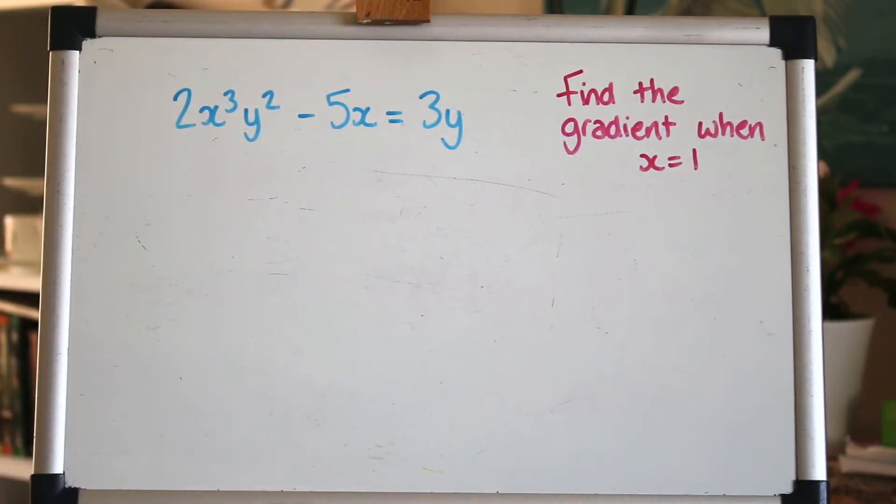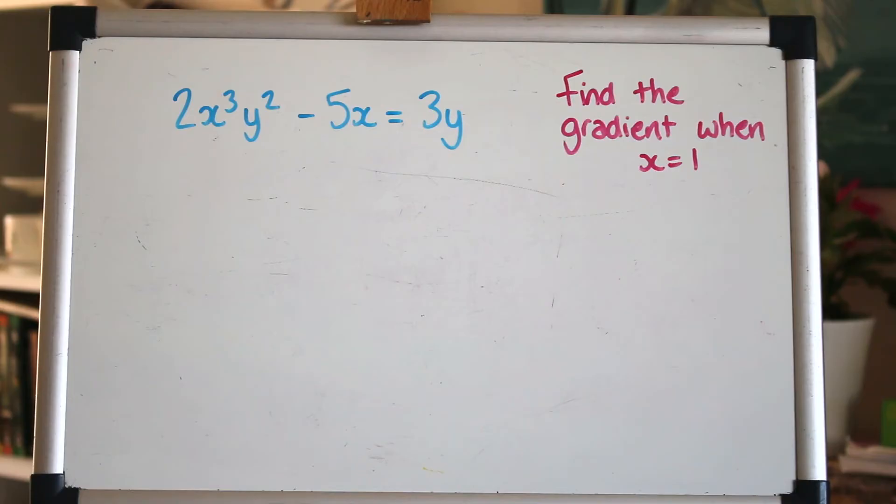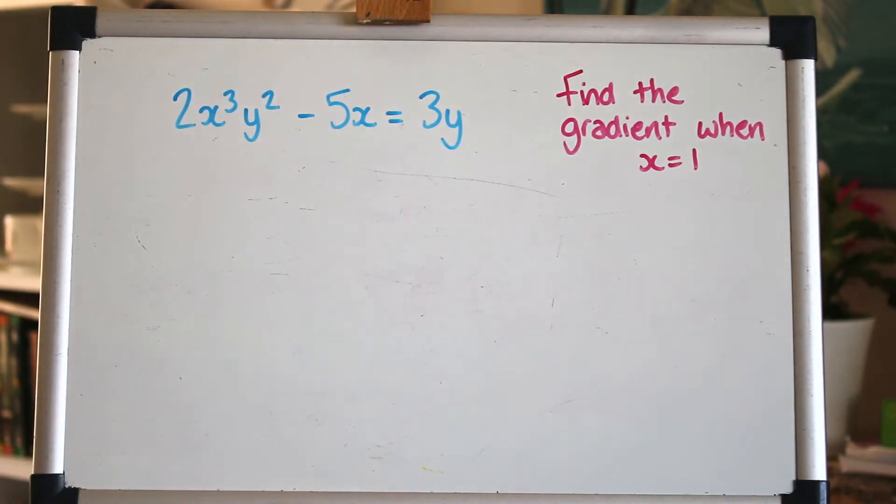Okay here we've got the second example question and this time I've made it focus on finding the gradient when x is 1 and so we're going to differentiate this and often you do end up with a very complex looking answer so instead of spending ages simplifying it all you need to do for a question like this is plug in x is 1 to get a numerical answer. So let's try and differentiate this now.